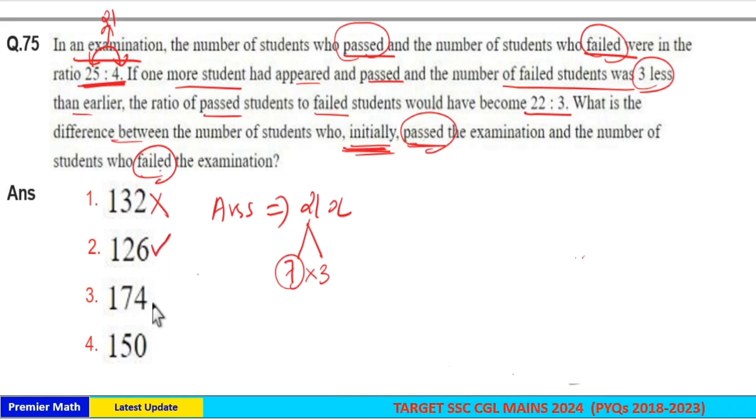7 goes 2 times in 14, remaining 34. 34 is not a multiple of 7. 7 goes 2 times in 15, remaining 10. 10 is not a multiple of 7. So option 2 is your answer. Just by option verification, you got your answer.